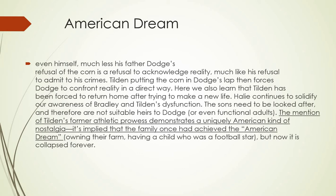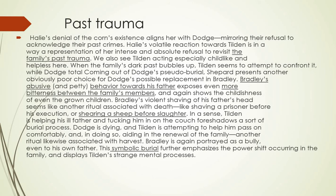The next theme is past trauma. All family members are undergoing a traumatic condition, evident both in their words and actions. Hailey's denial of the corn's existence and her arguments with Dodge reflect their refusal to confront past crimes the readers are still unaware of. Her hostile reaction towards Tilden represents an intense refusal to revisit the family's past trauma. We also see the childlike and helpless state of each family member. When the family's dark past begins to bubble up, Tilden seems to confront it — but Dodge, as his very name suggests, tries to dodge it.